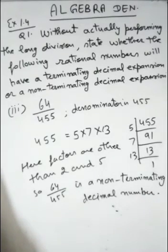If the denominator has factors other than 2 and 5, it will not be a terminating number.